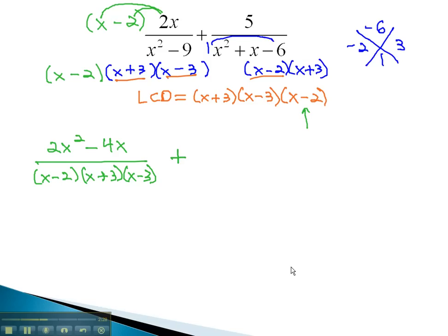Plus, in the second fraction, you may notice it's missing the factor x minus 3. So we will multiply numerator and denominator by x minus 3. Distributing the 5 through will give us 5x minus 15, over the common denominator, x minus 2 times x plus 3 times x minus 3.